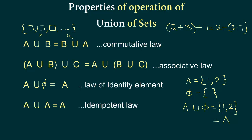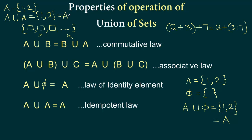The fourth property is the idempotent law: A union A equals A. If A is {1, 2} and we write all elements of A and then all elements of A again, we cannot repeat elements, so we still just get {1, 2}, which is set A.